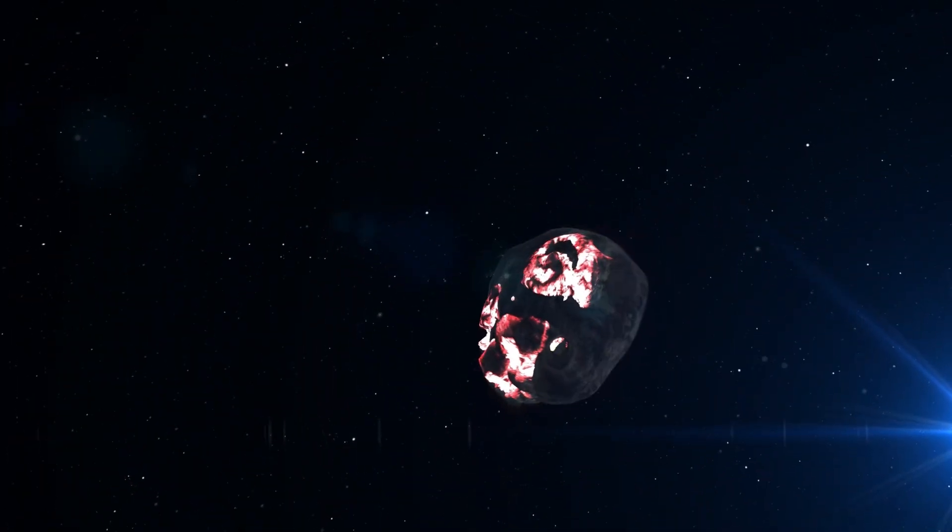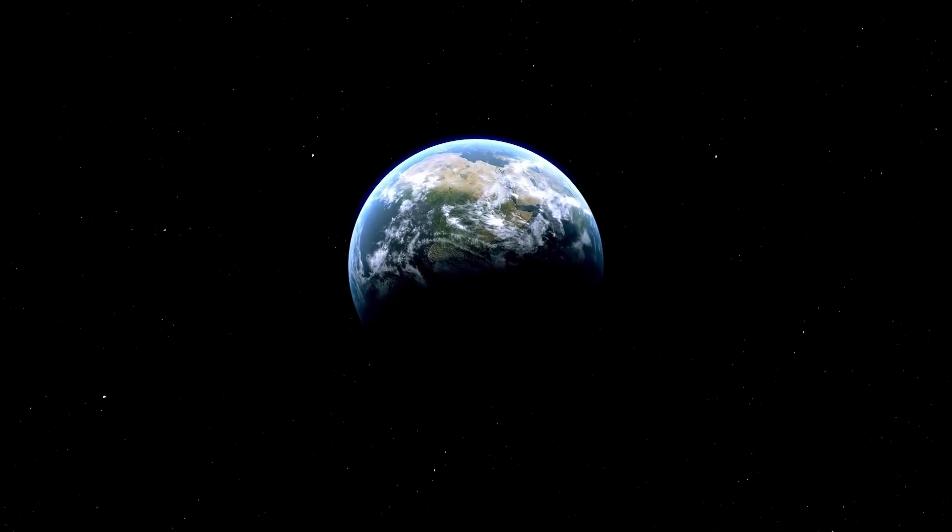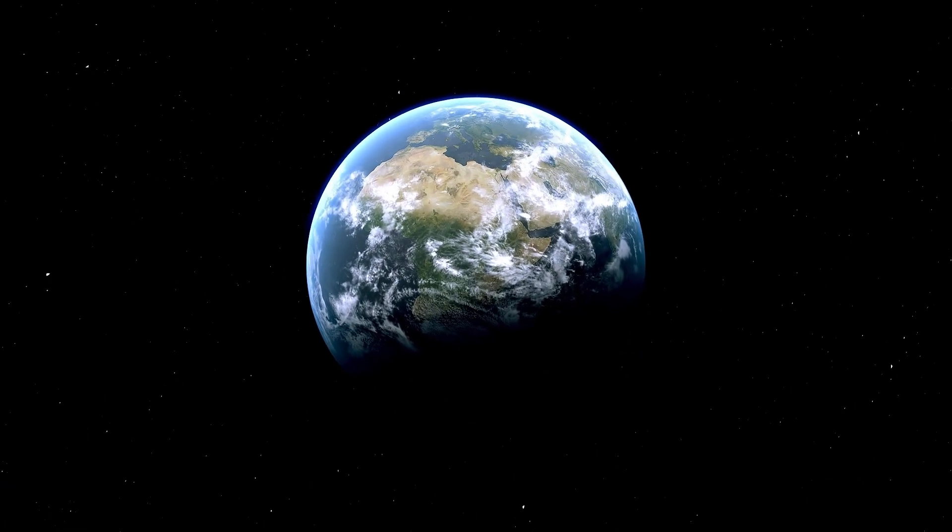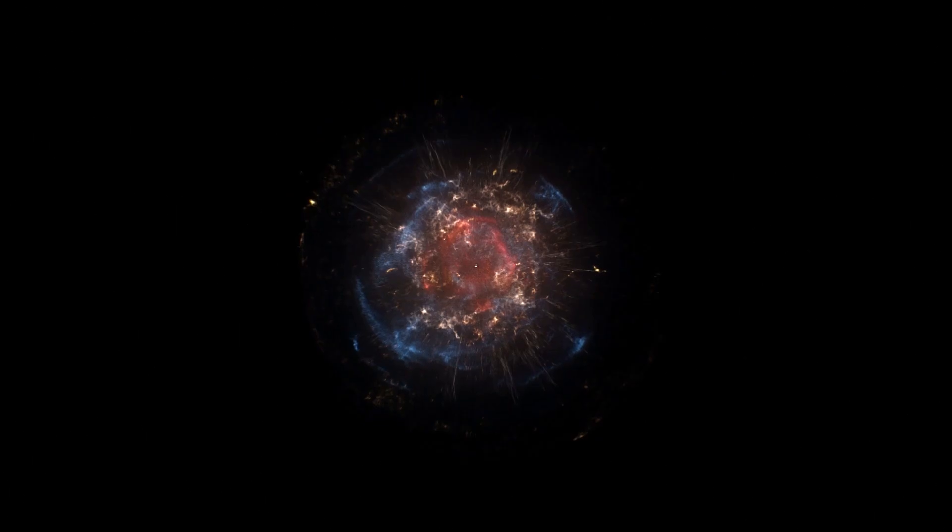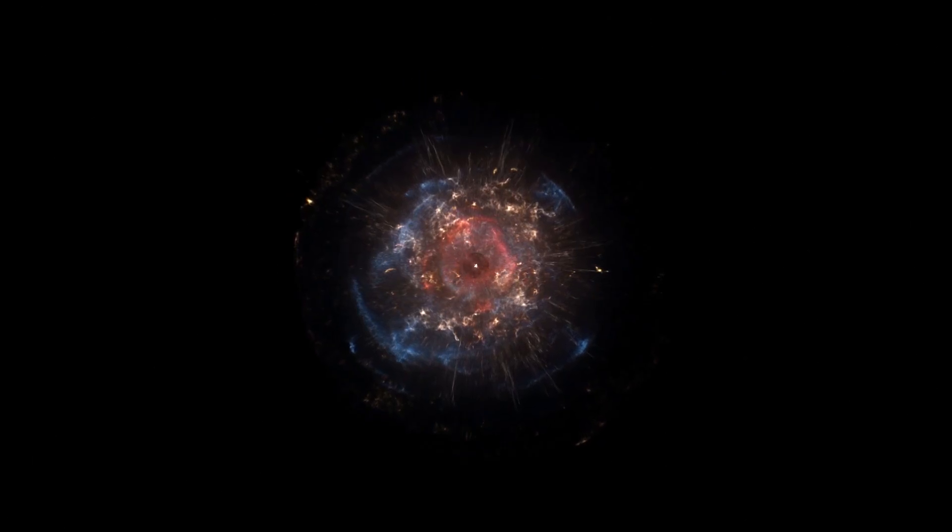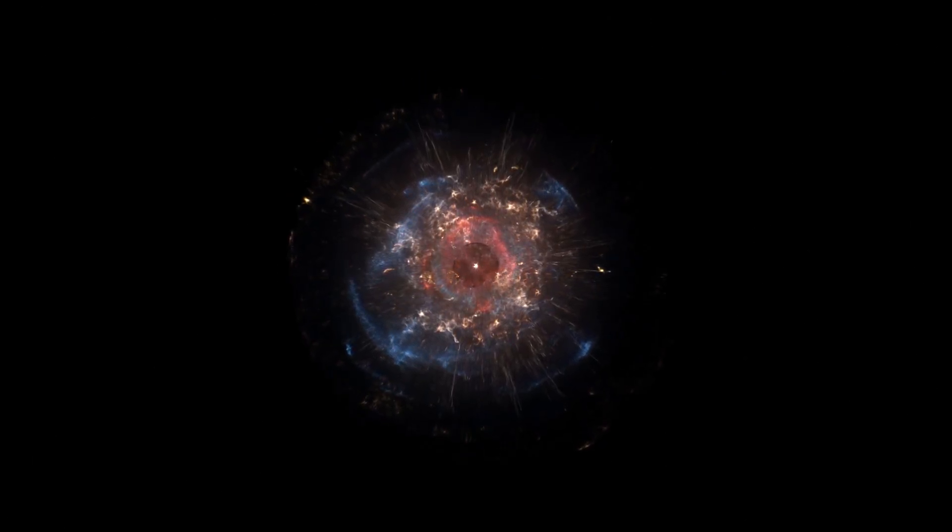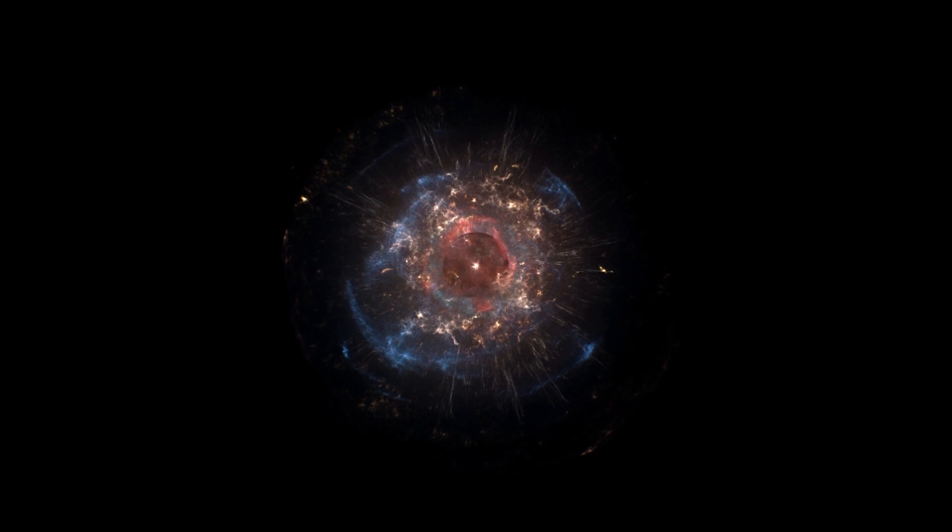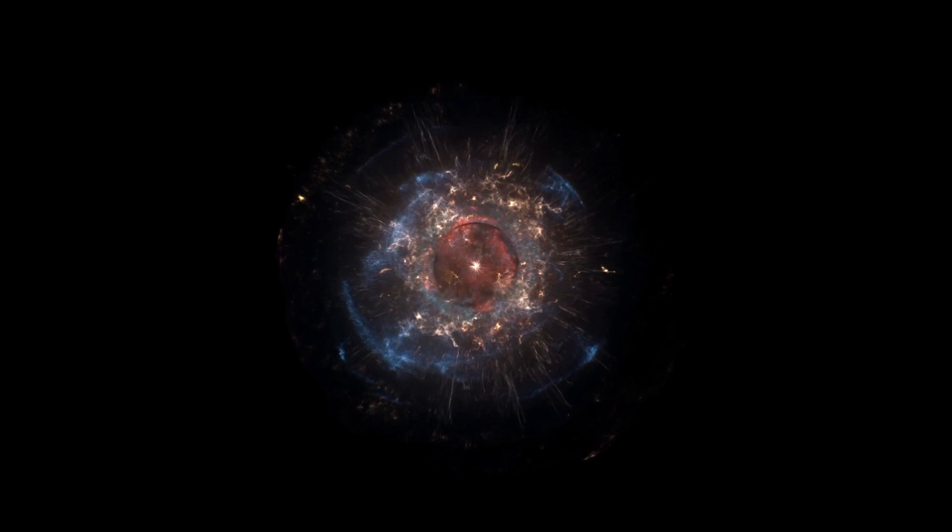Will Earth be destroyed by the Betelgeuse supernova? Since Betelgeuse is so far away from Earth, its explosion won't kill or even severely disrupt life here. According to astronomers, the safest distance from a supernova for human life is 50 light years, making Betelgeuse over 10 times more distant. Instead, everyone on Earth will get a show when a very bright star suddenly appears in the sky.